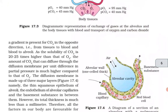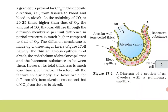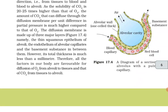Similarly, a gradient is present for CO2 in the opposite direction — from tissues to blood and blood to alveoli. As the solubility of CO2 is 20 to 25 times higher than that of O2, the amount of CO2 that can diffuse through the diffusion membrane per unit difference in partial pressure is much higher compared to that of O2. The diffusion membrane is made up of three major layers: the thin squamous epithelium of alveoli, the endothelium of alveolar capillaries, and the basement substance in between them. Its total thickness is much less than a millimeter, so all factors are favorable for diffusion of O2 from alveoli to tissues and CO2 from tissues to alveoli.